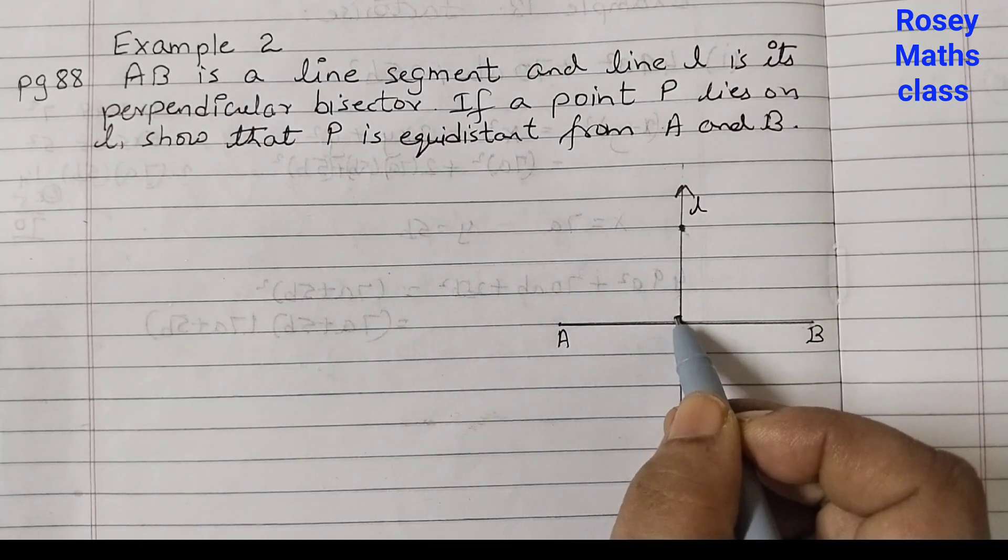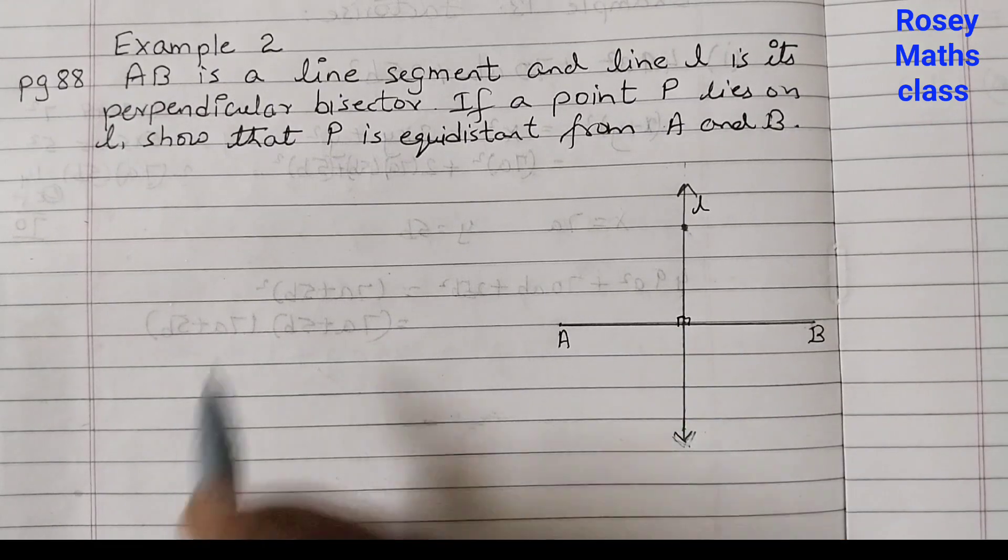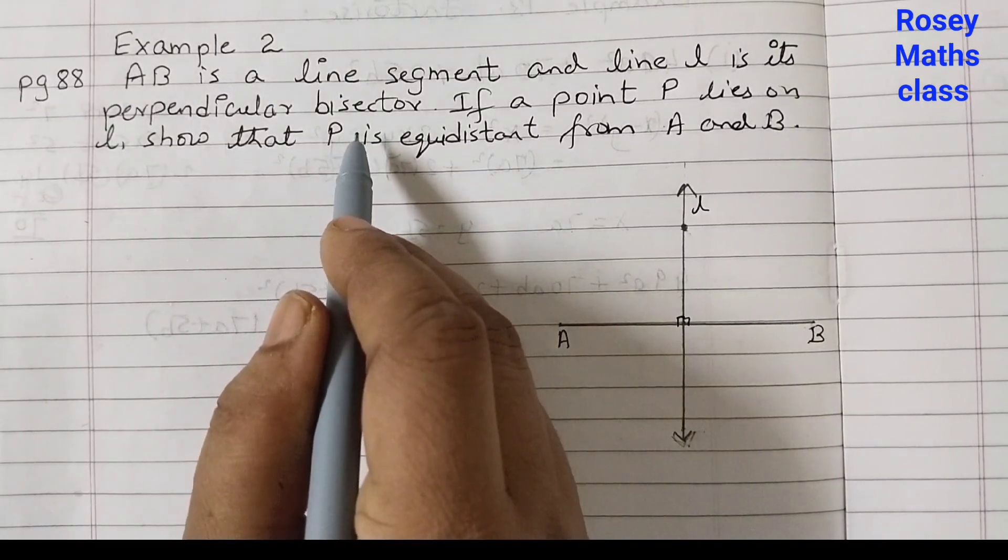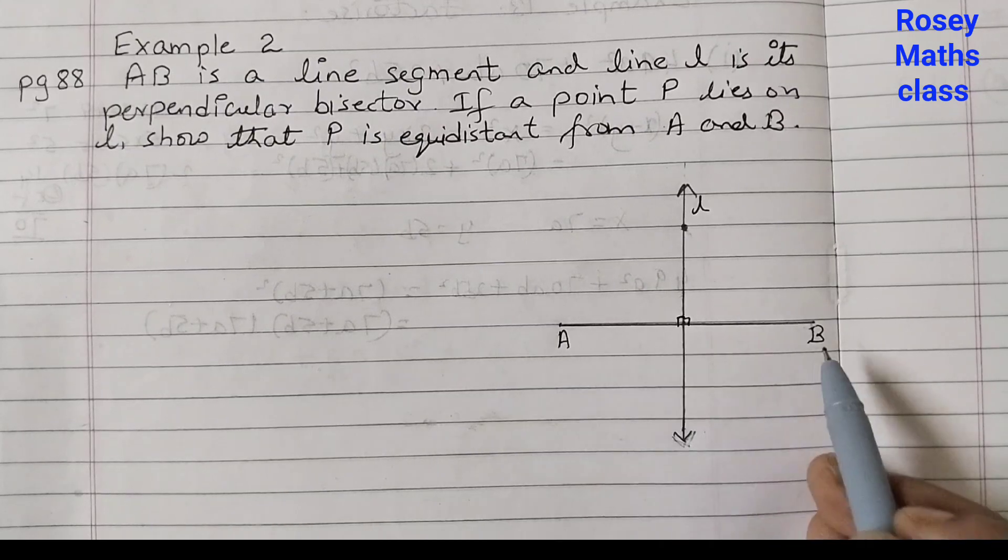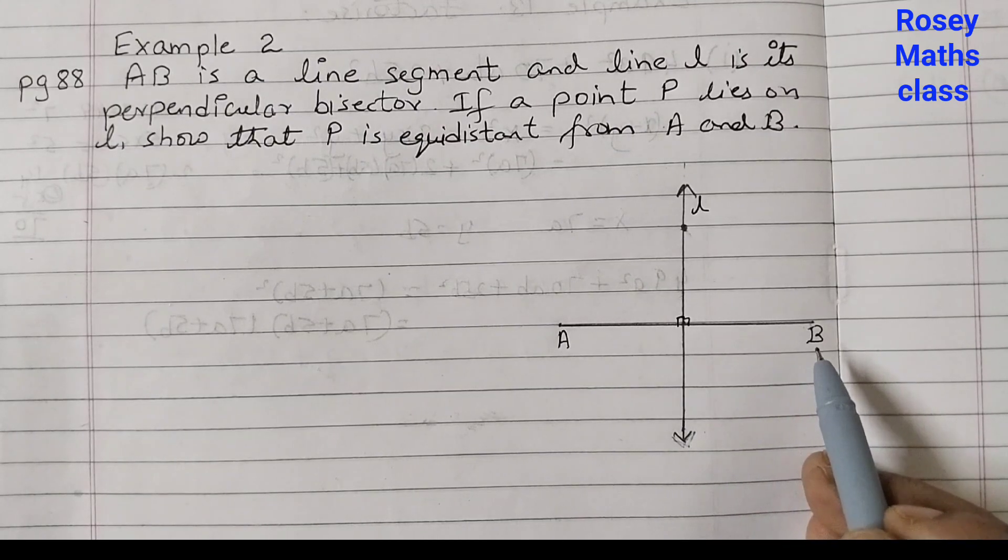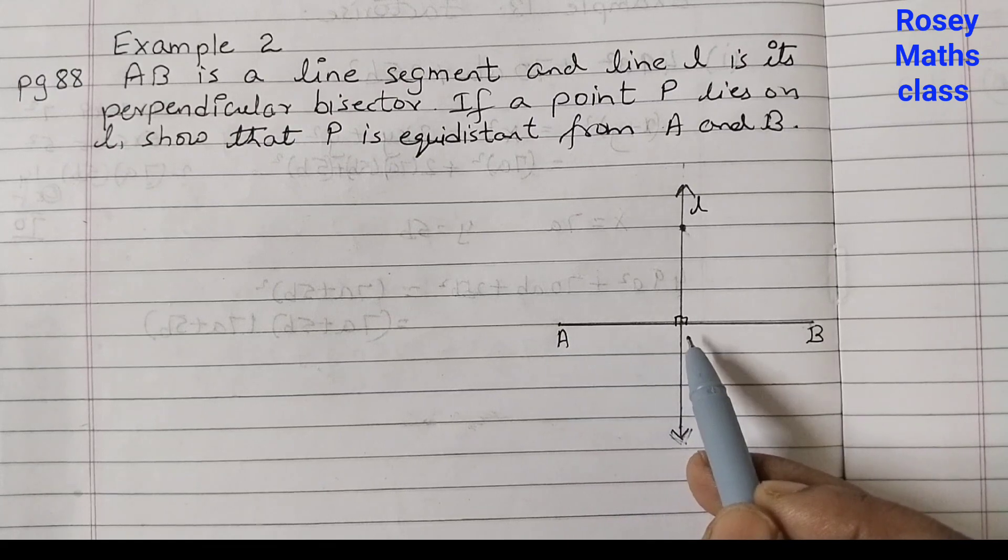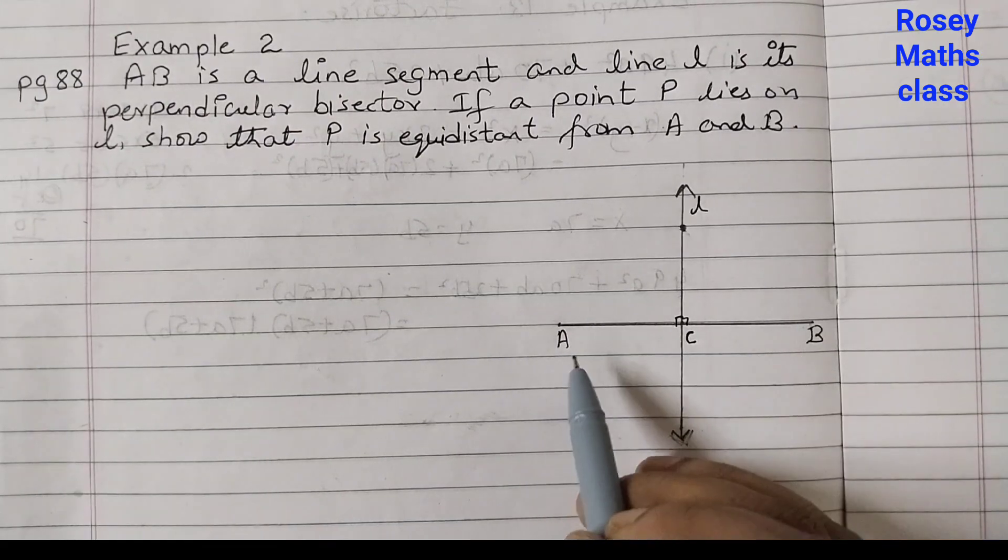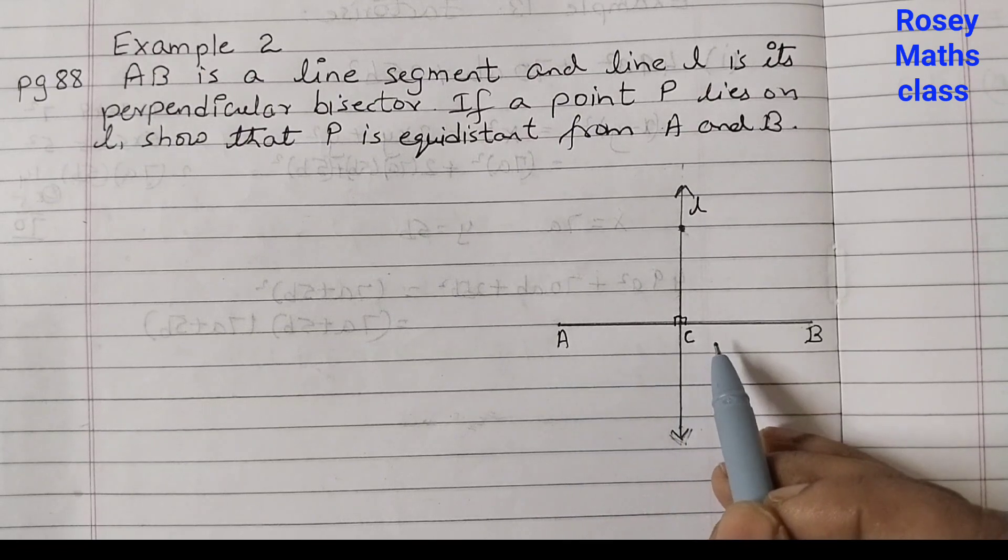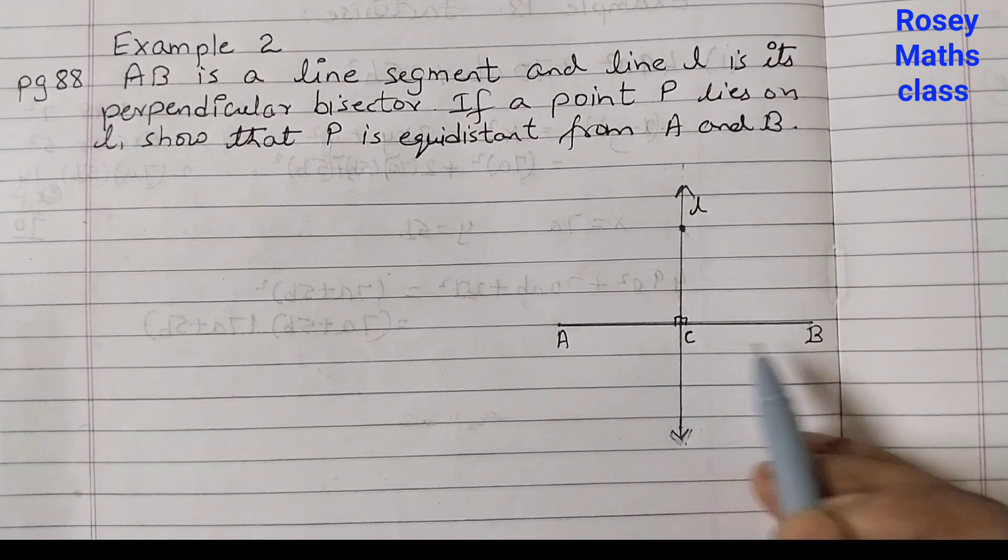So this is making 90 degrees angle here because it is perpendicular and bisector means this line is dividing AB into two equal parts. So if I label this as C then AC is equal to CB. So that is the meaning of perpendicular bisector.